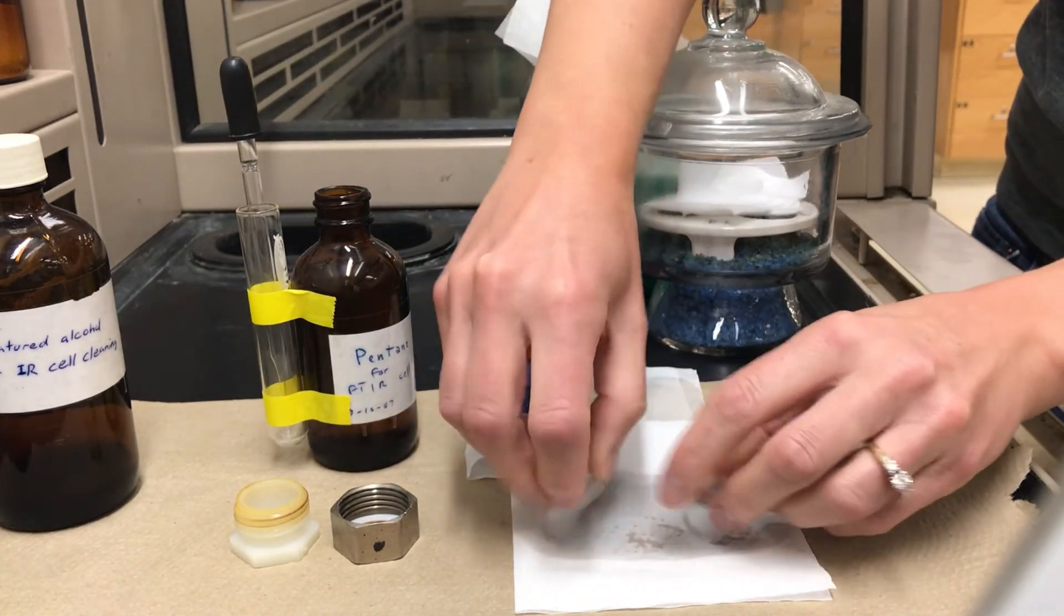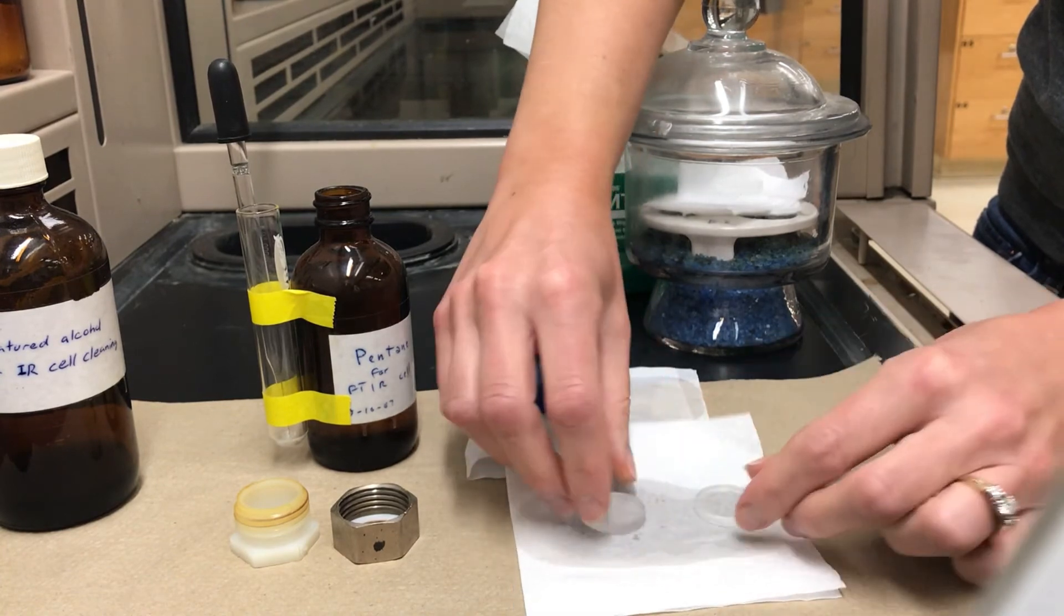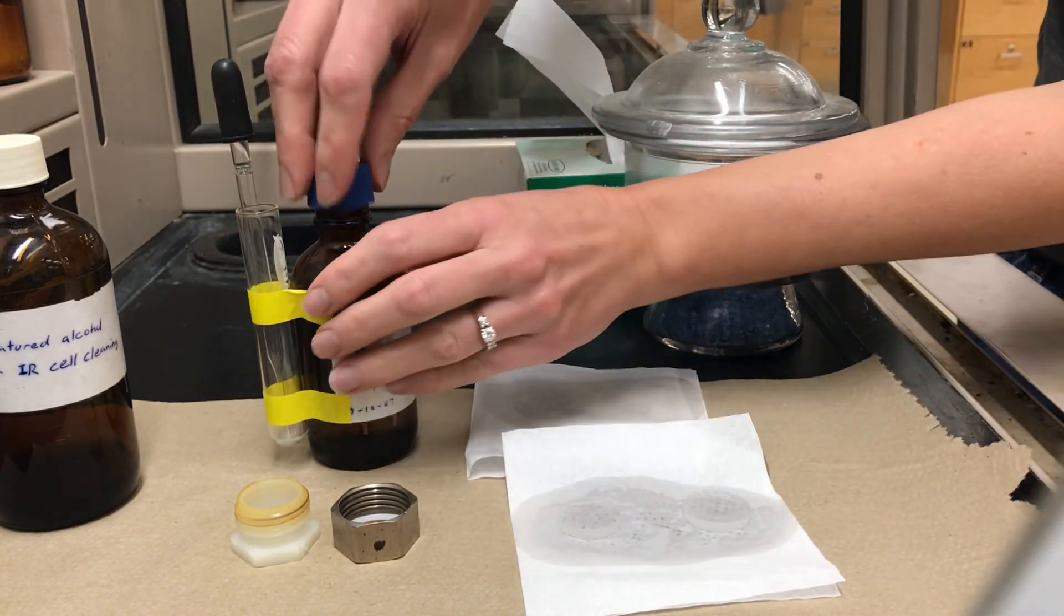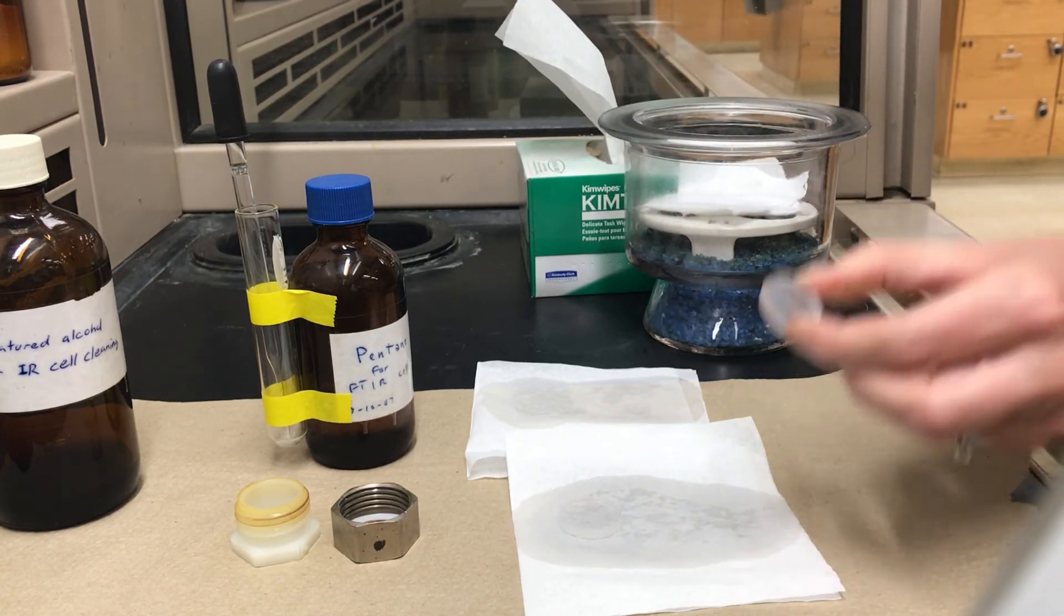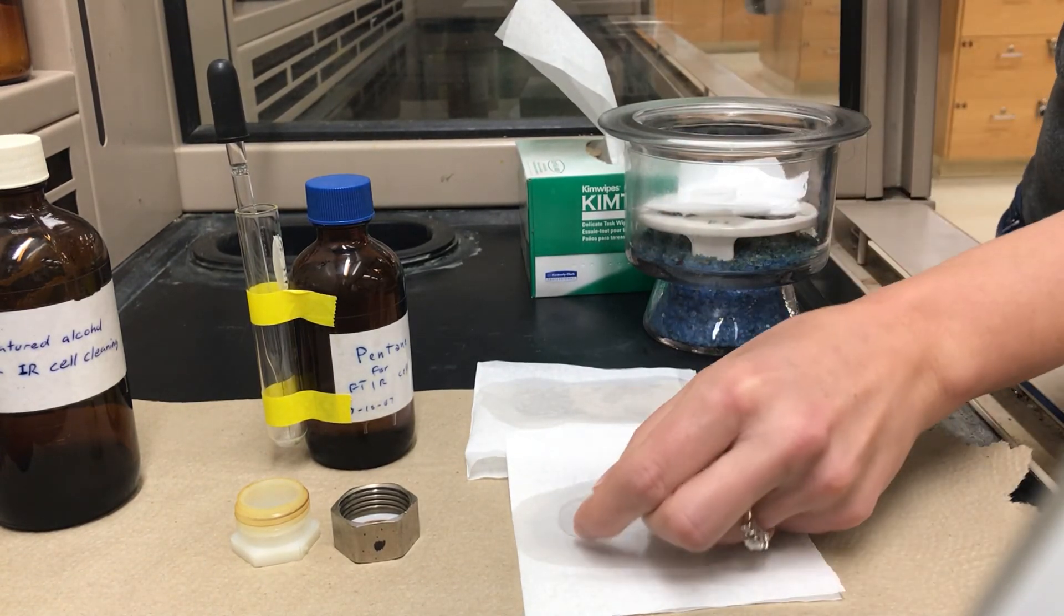Pentane also evaporates quite quickly so you have to deal with it quite quickly but use the same method where you just wipe it around on the kim wipe and then when you're done those salt plates go back in the desiccator for the next person.